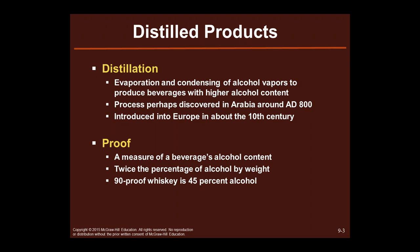Another vocabulary word: proof. If you look at any alcohol beverage, it will say what its proof is. Proof is a measure of the beverage's alcohol content, and it's actually twice the percentage of alcohol by weight. For example, if you see that a whiskey is 90 proof, it means that that beverage is 45% alcohol. So 90 proof whiskey is 45% alcohol.